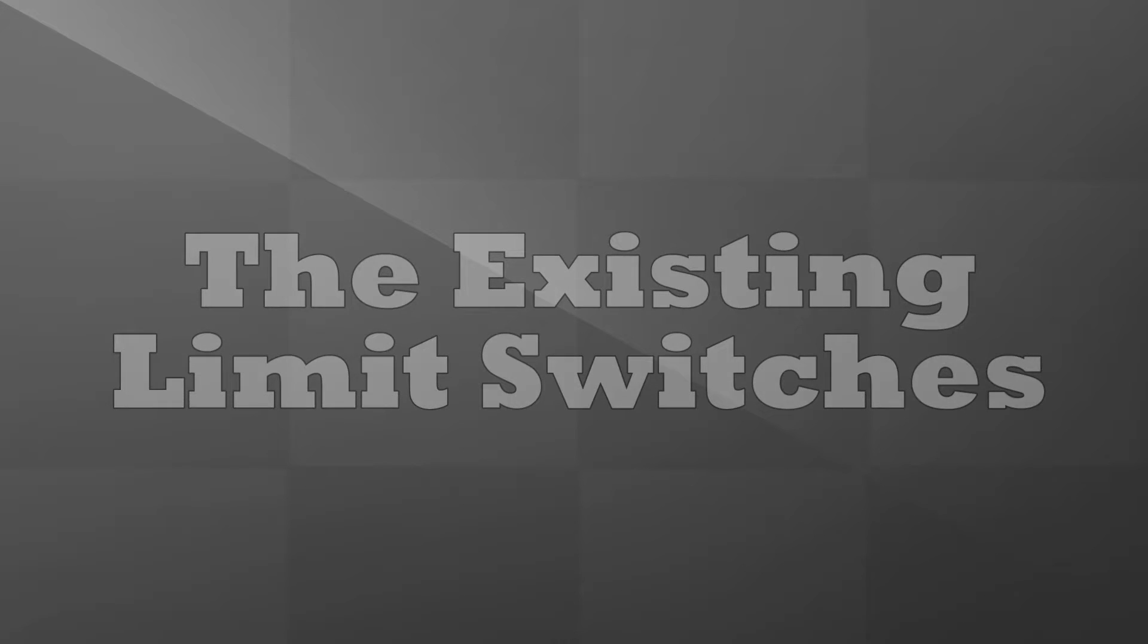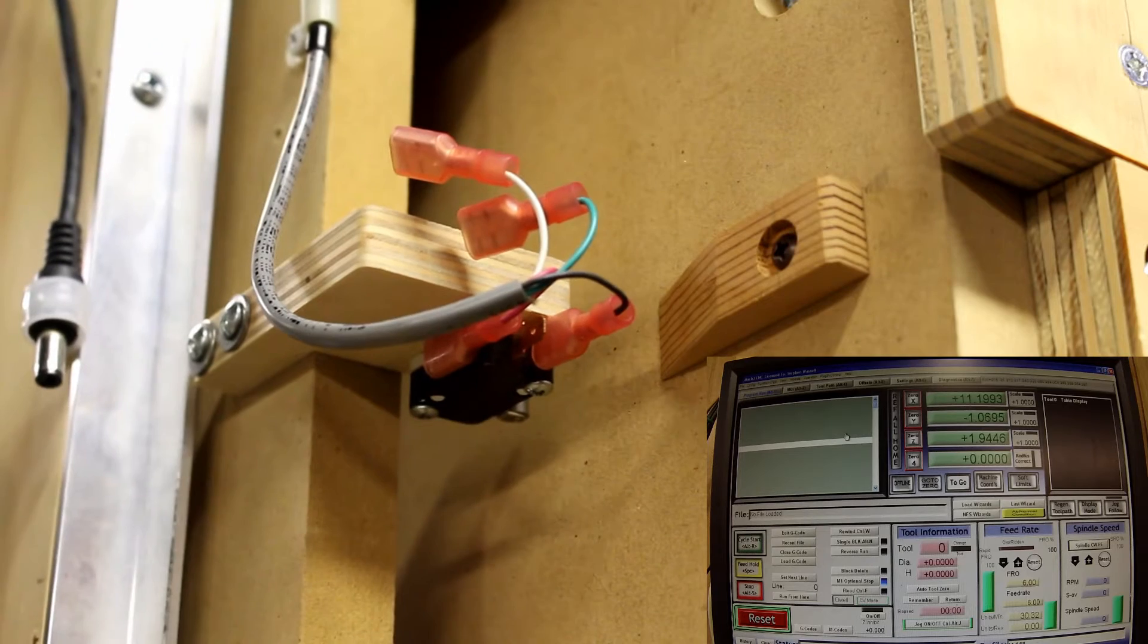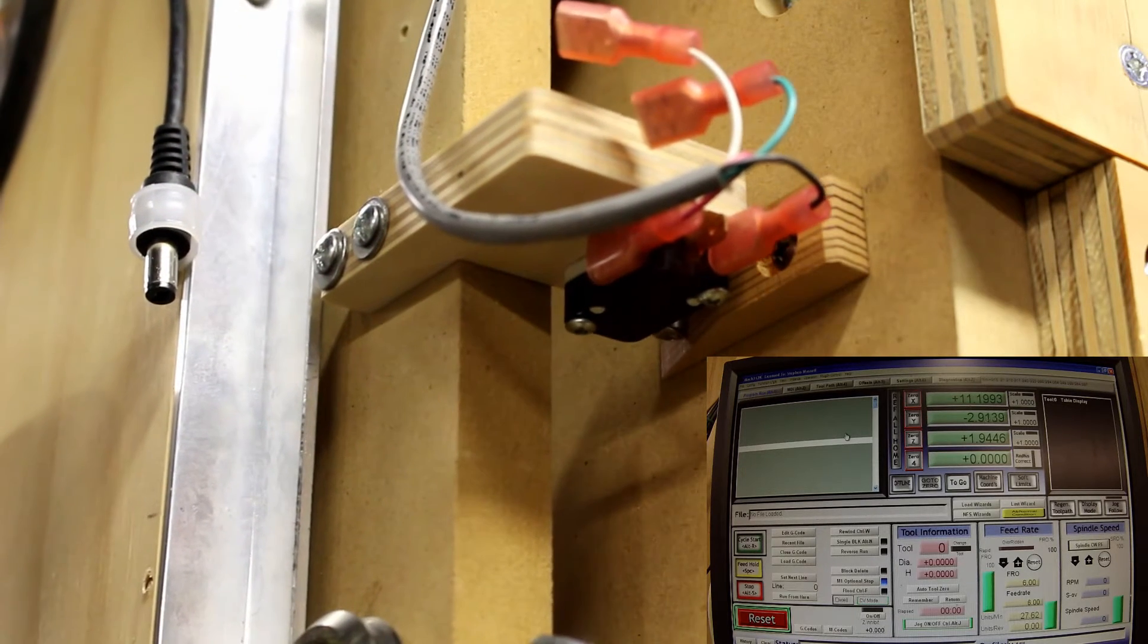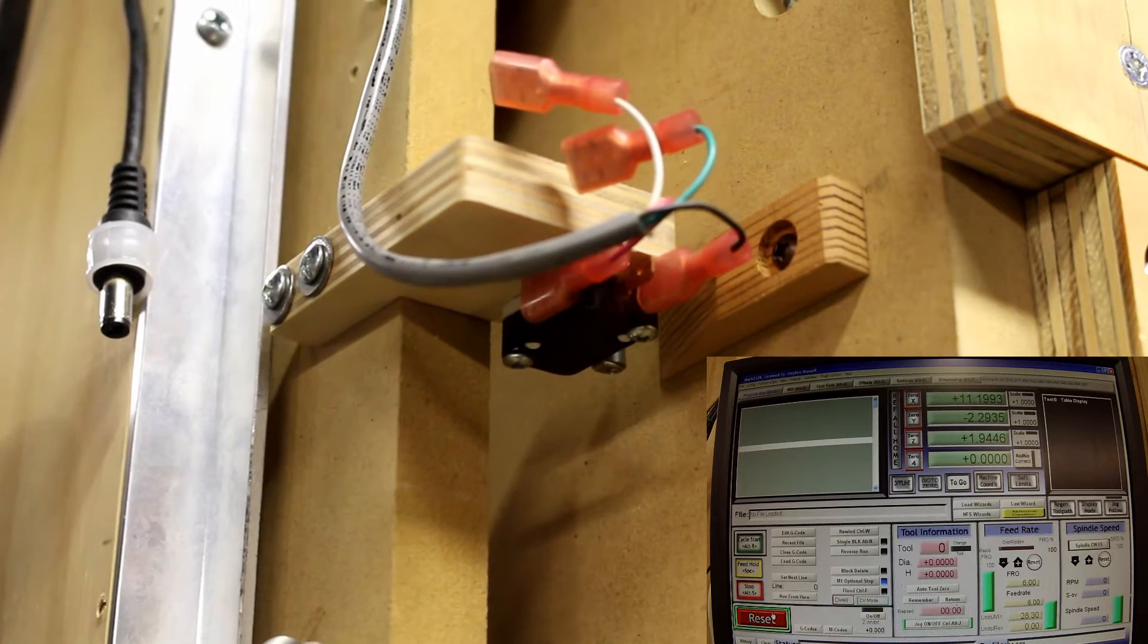Now you'll see how my existing limit switches work. As it moves over, you can see on the bottom of that little bracket, when it hits that ramp, the lever activates, and what basically shuts it down. You can see the reset button flashing in the little right-hand corner inset. So once I clear that, then I can back it off and move it away.